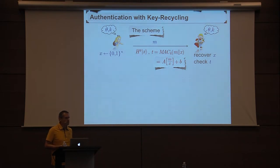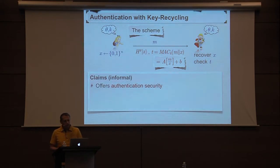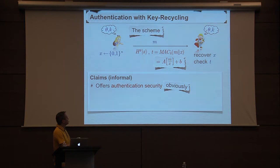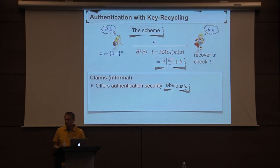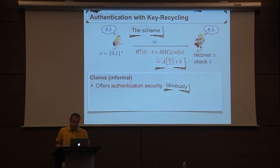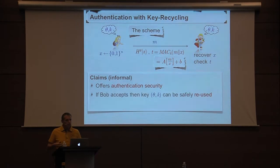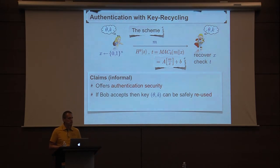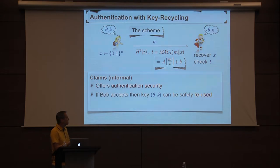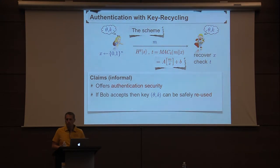Informally, these are the security claims. First, the scheme offers authentication security — Bob is going to detect any modification to the message. That's essentially the job of the MAC: it ensures any modification to the message is detected, at least as long as the key is good. The second, more interesting claim is that if Bob accepts, then the key can be safely reused for authenticating a second message, a third message, and so on. Even though typically this kind of MAC can only be used once with a given key, here if Bob accepts, they can reuse the same key in the next round.